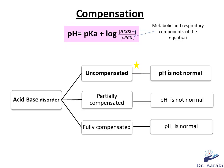The compensation mechanisms begin to correct the pH whenever an acid-base disorder is present. If the compensation mechanism can return the pH completely to normal, it is called fully compensated. When it cannot return the pH to normal, we have two cases: partial compensation and non-compensation.